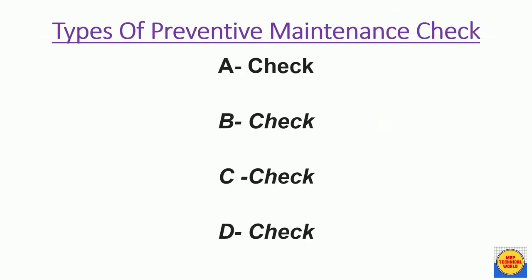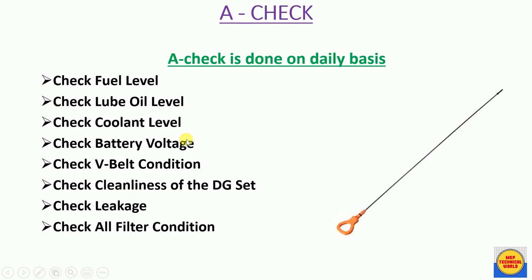There are four types of preventive maintenance checks: A check, B check, C check, and D check. Let's discuss each one by one. A check is done on a daily basis.